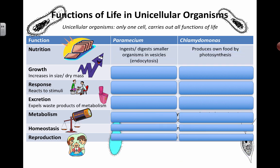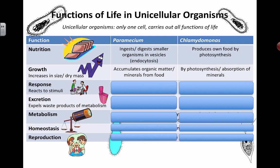In terms of nutrition, the paramecium uses a cellular process called endocytosis — taking in smaller things by folding the plasma membrane. Whereas chlamydomonas, because it can do photosynthesis, can actually produce its own sugar using photosynthetic processes and light from the sun.